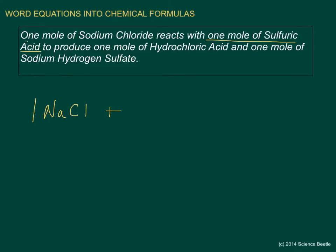Remember, sulfuric acid has a very specific formula. Since it's an acid, it's going to begin with a hydrogen, and so it's going to have H₂SO₄. If you need assistance on how to convert a name into an actual chemical formula, go back and watch the videos provided on that topic.